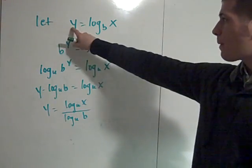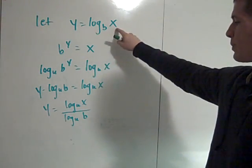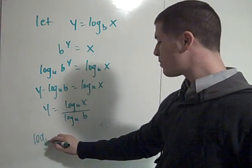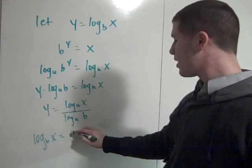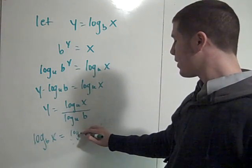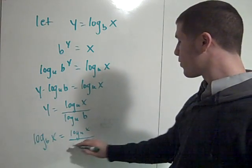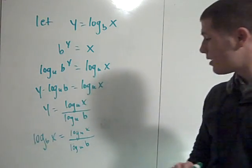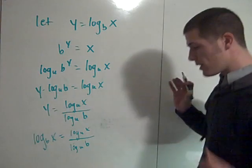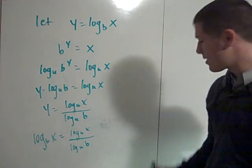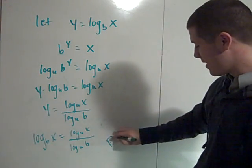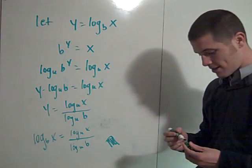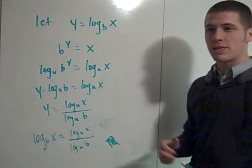Remember that y is equal to log base b of x. So we have log base b of x equals log base u of x over log base u of b. The change of base formula works — amazing. And that concludes Properties of Logarithms.